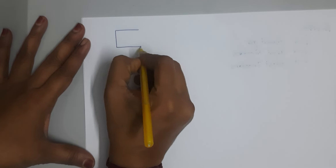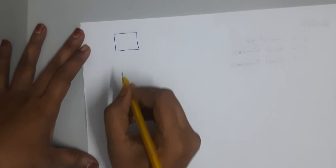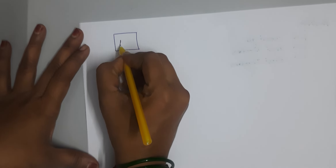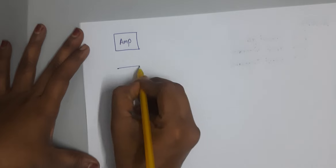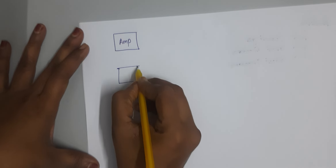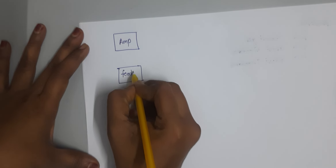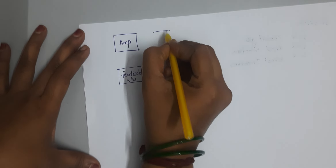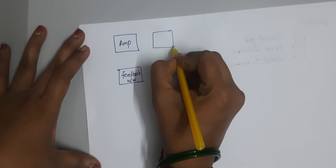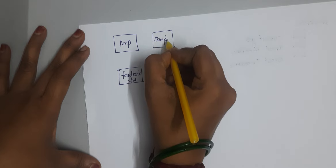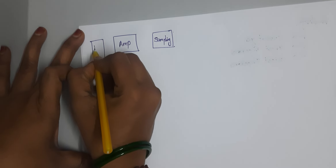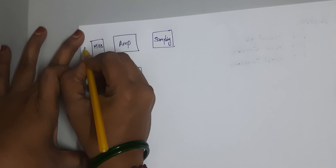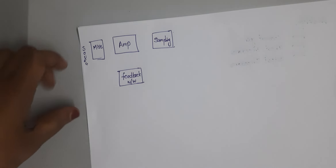Here it consists of a basic negative feedback amplifier, an amplifier block, and the feedback network. In the output section we have sampling, and at the input section a mixer with the source. So this is the basic feedback amplifier.